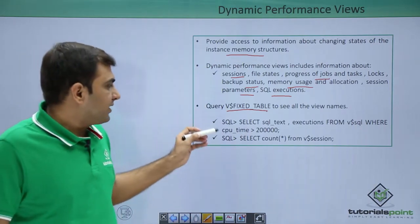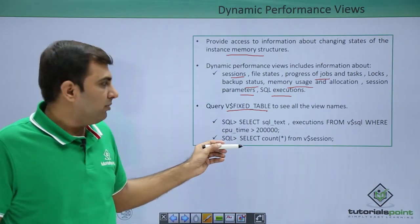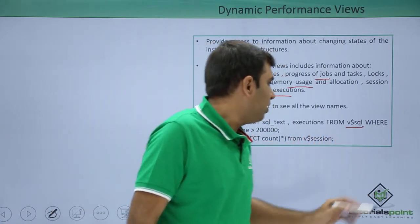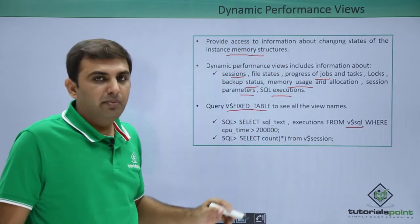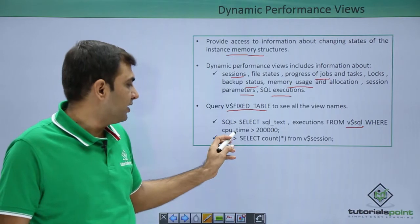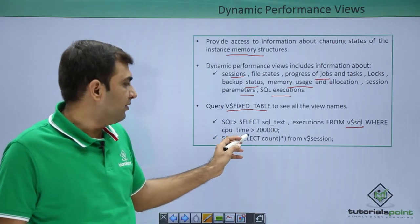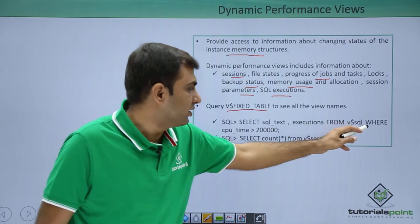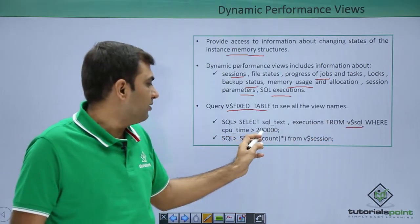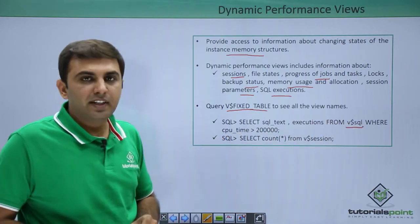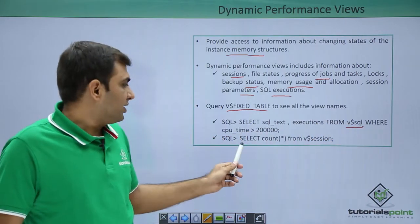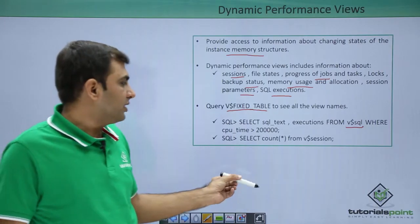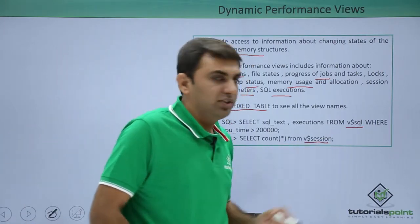Here are two examples of dynamic performance views. The first is v$SQL — if you want to see which SQL statements are consuming more than 200,000 seconds of CPU time, you can execute: SELECT sql_text, executions FROM v$SQL WHERE cpu_time > 200000. Next, to see how many sessions are connected, you can get that information from v$session.